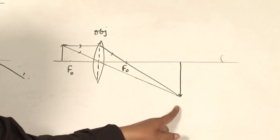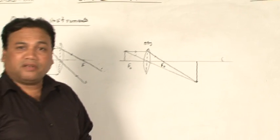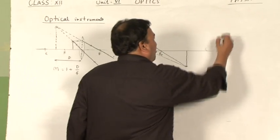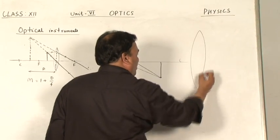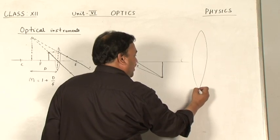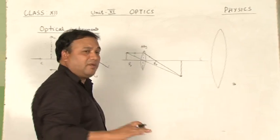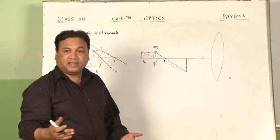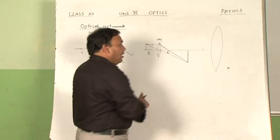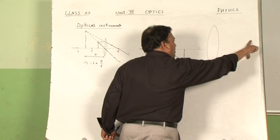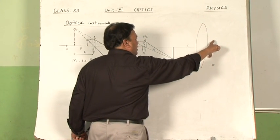If we want further magnification, we take another lens placed towards the eye — the eyepiece — which has a larger focal length than the objective lens. By adjusting the distance of this lens, we can achieve additional magnification of the intermediate image formed by the objective.